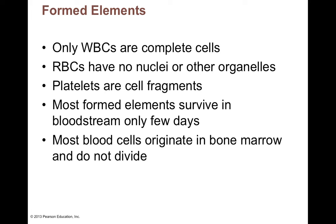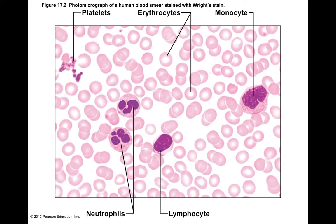On a blood smear, we see white blood cells — we can identify them because they have nuclei, which makes sense. You see a big nucleus there — those are leukocytes. We also see red blood cells, and you can tell they don't have a nucleus because even the centers of those cells look kind of clear. It's not that they have a hole in the middle — it's just that they don't have a nucleus to absorb light, so the center looks more clear.